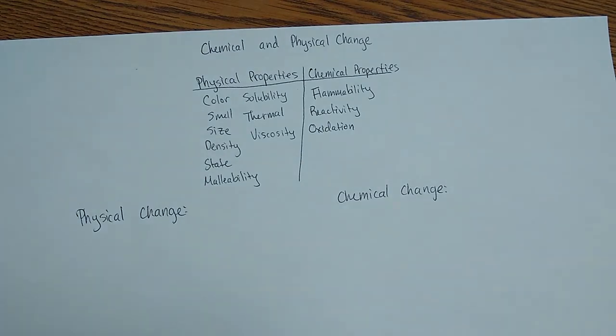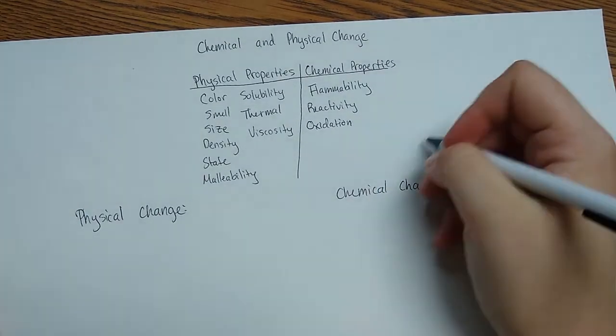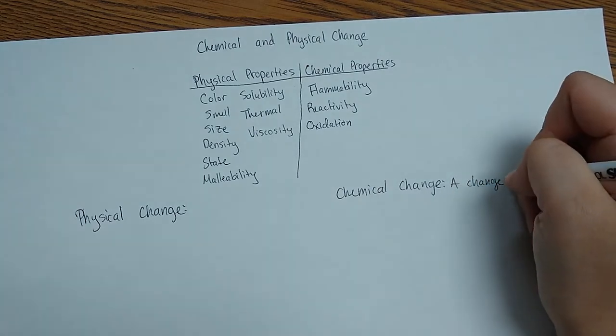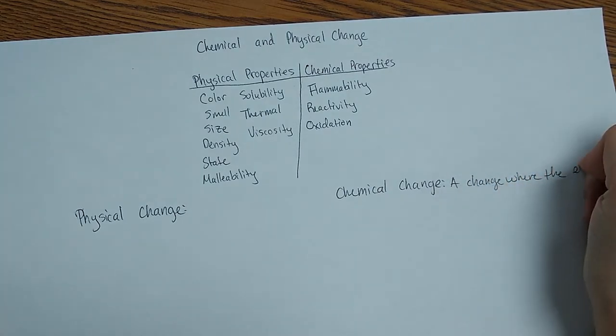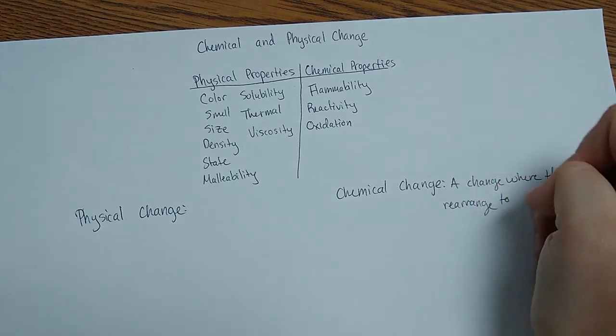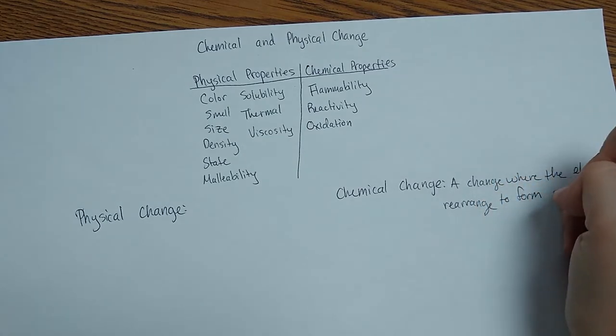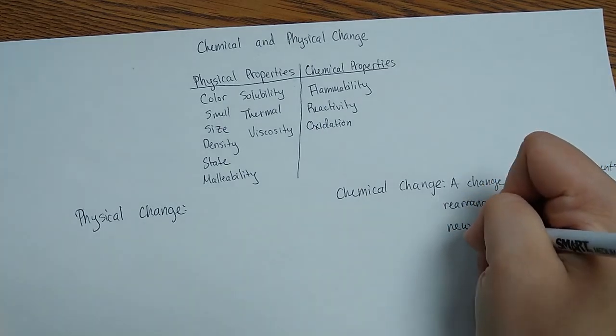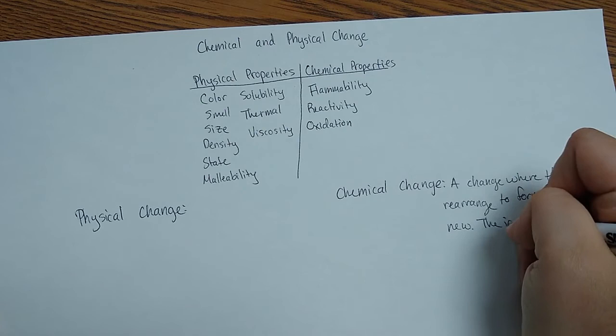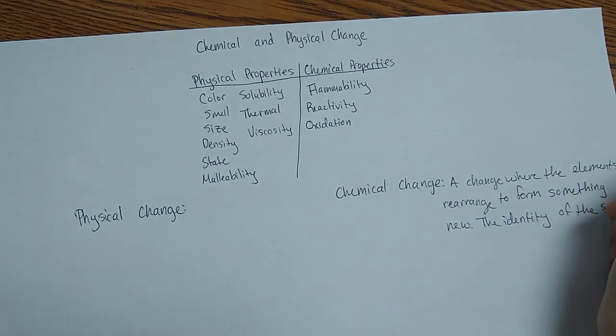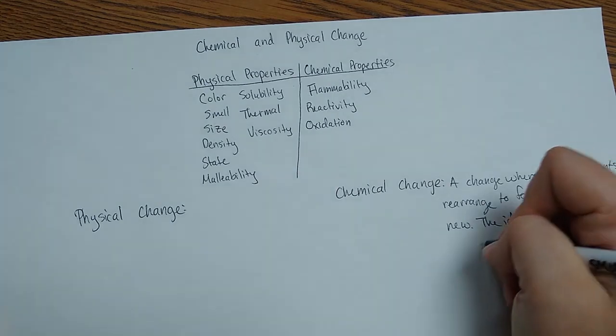Okay, so physical change and chemical change. I'm actually going to start with chemical change. A chemical change is a change where the elements rearrange to form something new. So, the identity of the substance is different.